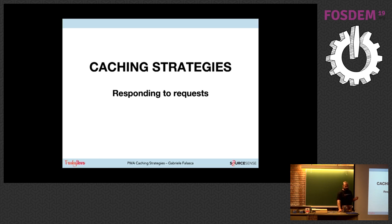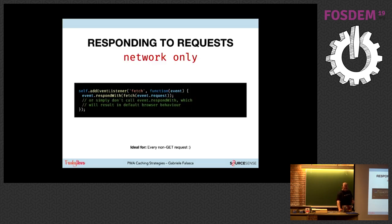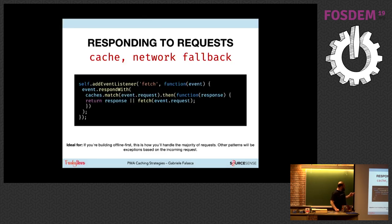Now let's see how to respond to requests — when to use cached data versus network data, and some hybrid approaches. The simplest strategy is network-only: ideal for non-GET requests such as form submissions, where you have to send data to the server. The most used strategy is cache-first: if I have the result in cache, I return it; if not, I go to the network.